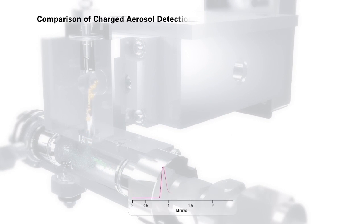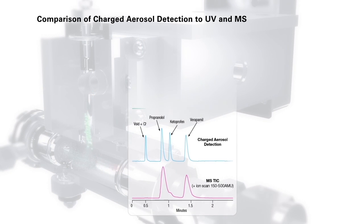This example shows a comparison of charged aerosol detection to UV and MS for the detection of pharmaceuticals. As you can see from these overlaid chromatograms, there are components detected with charged aerosol technology, but not by ultraviolet detection or mass spectrometry.